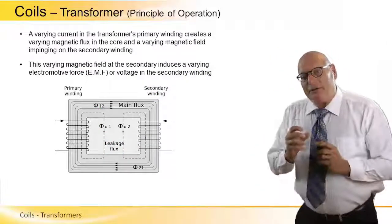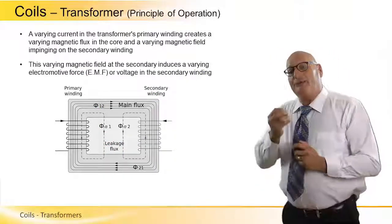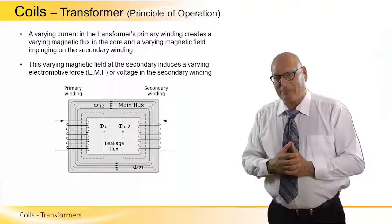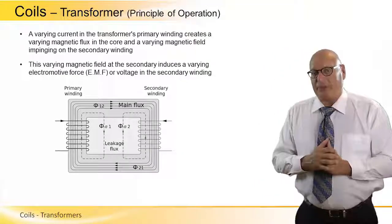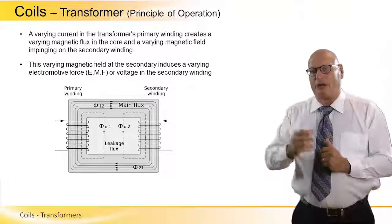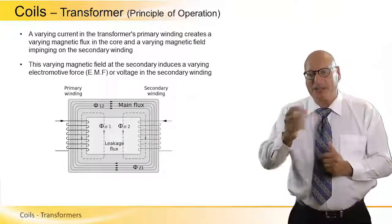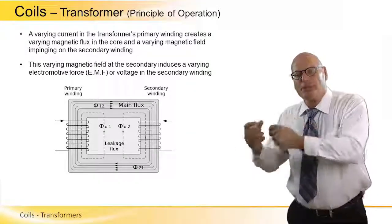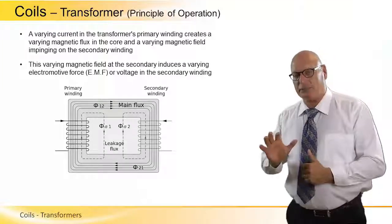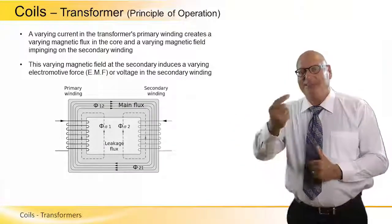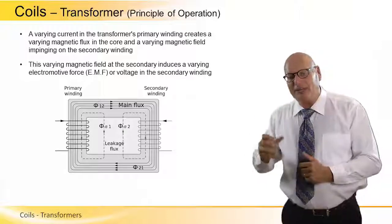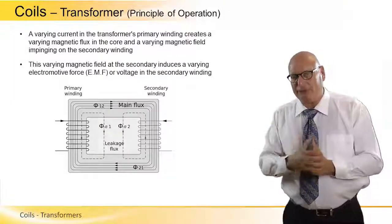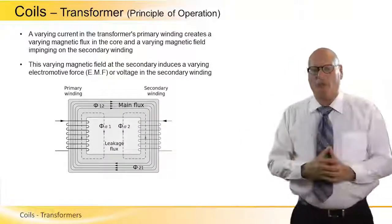And let's look now a little bit more in depth at the fields and the direction of the fields associated with a transformer. And I repeat, a varying current in a transformer's primary winding creates a varying magnetic flux in the core and a varying magnetic field impinging on the secondary windings. This varying magnetic field at the secondary induces a varying electromotive force, EMF, or voltage in the secondary winding.